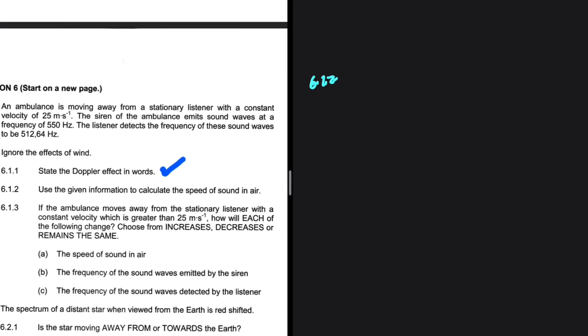So let's take a look at the information we have. An ambulance is moving away from a stationary listener. So if the listener is stationary, then we have VL, the velocity of the listener, being equals to 0. The ambulance is moving away from the stationary listener with a constant velocity of 25. So we have VS, the velocity of the source, being equals to 25.